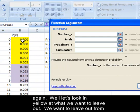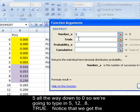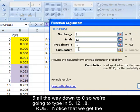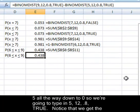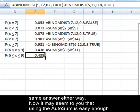Well, let's look in yellow at what we want to leave out. We want to leave out from five all the way down to zero. So we're going to type in five, twelve, point eight, true. Notice that we get the same answer either way.